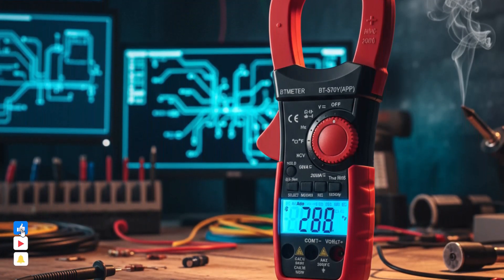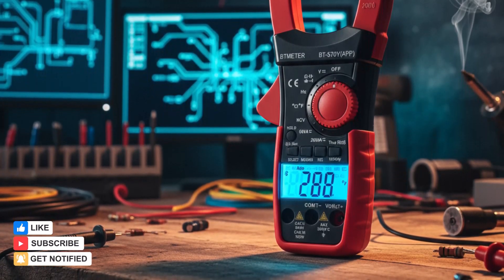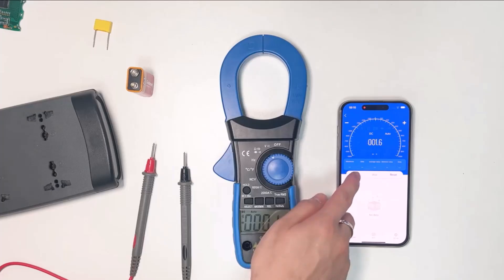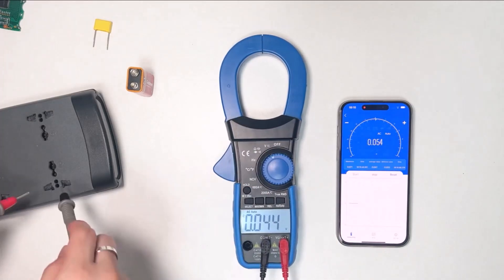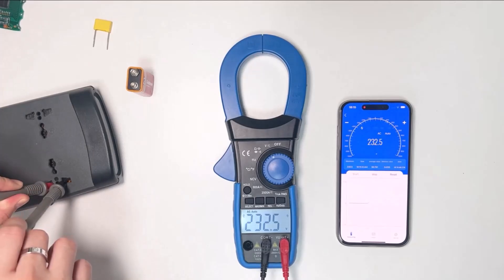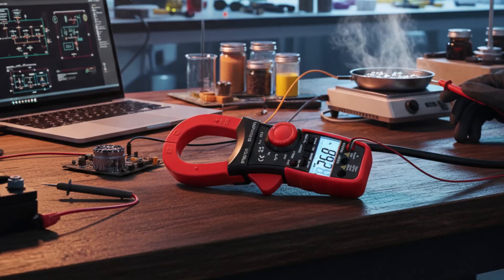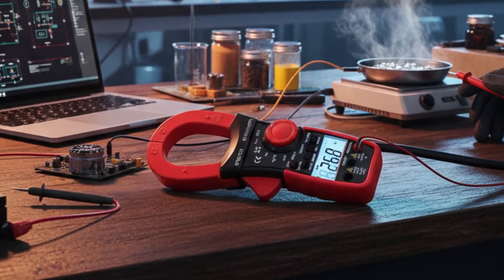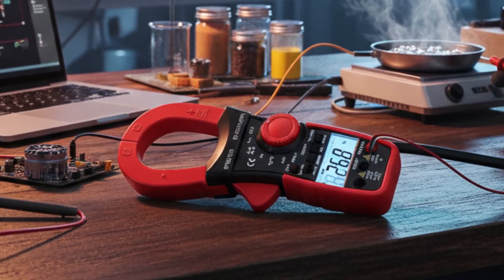Although the specification list is concise compared to other models, it is tailored for essential electrical measurements and dependable day-to-day usage rather than overwhelming the user with extra functions. For those who prefer a minimalist digital clamp meter that covers the basics with precision and reliability, the BT Meter Digital Clamp Meter provides an affordable yet trustworthy solution without unnecessary complexity.